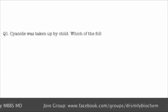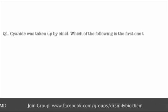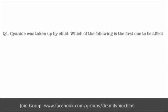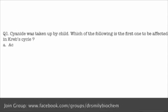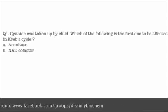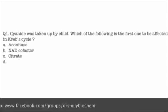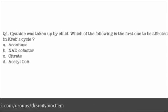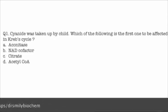Question number 1. Cyanide was taken up by a child. Which of the following is the first one to be affected in Krebs cycle? Options are aconitase, NAD co-factor, citrate and acetyl-CoA. In this question they are asking the effect of cyanide on TCA cycle. Cyanide directly does not affect TCA cycle, so this is a tricky question.